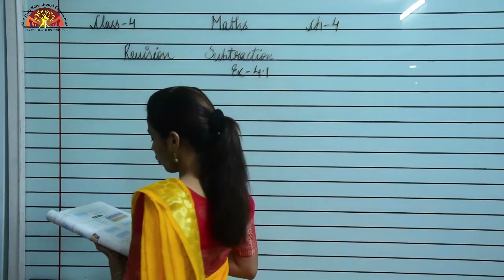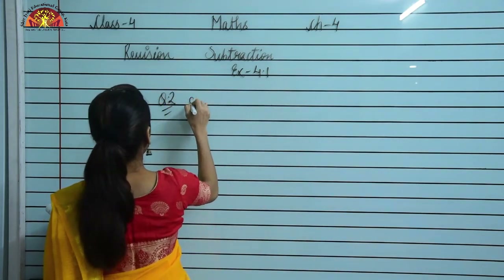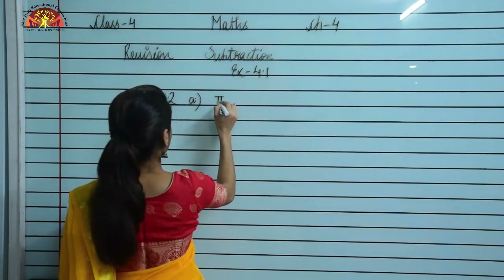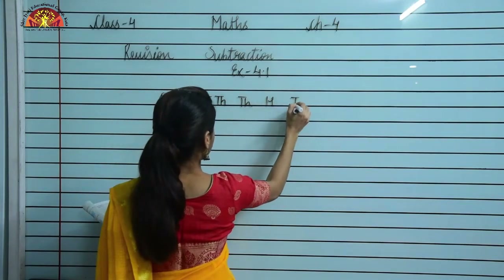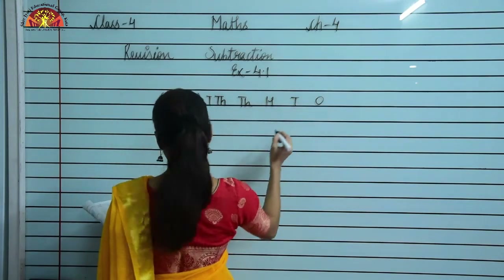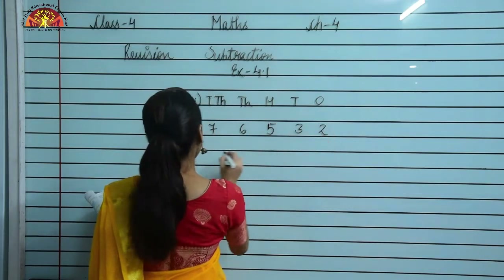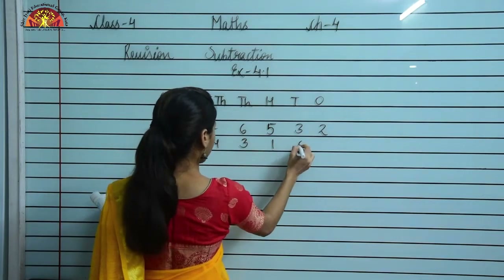We are going to do question number 2 of exercise 4.1. Question number 2 is: subtract the numbers. In part A, the place value columns are 10,000s, 1,000s, 100s, 10s, and 1s. The problem is 76,532 minus 43,102.